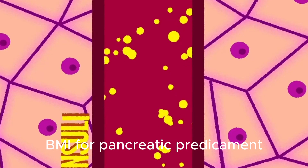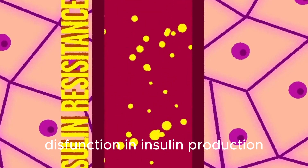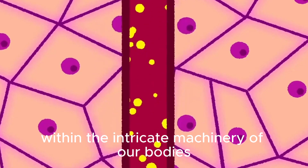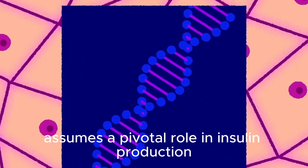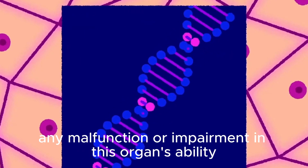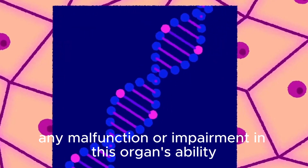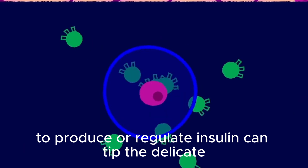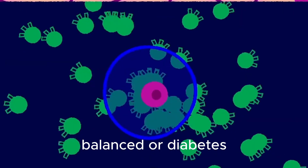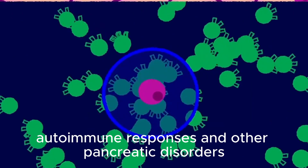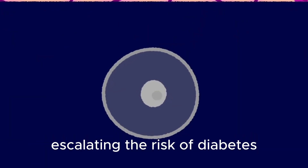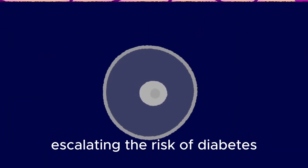Pancreatic predicament — dysfunction in insulin production. Within the intricate machinery of our bodies, the pancreas assumes a pivotal role in insulin production. Any malfunction or impairment in this organ's ability to produce or regulate insulin can tip the delicate balance toward diabetes. Autoimmune responses and other pancreatic disorders contribute to this silent struggle within, escalating the risk of diabetes.